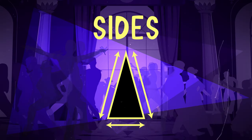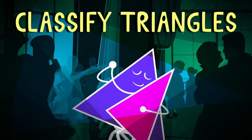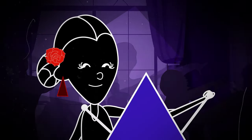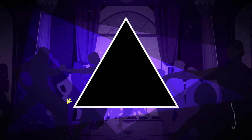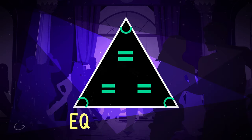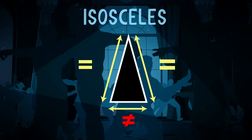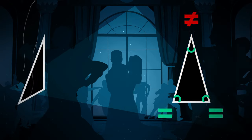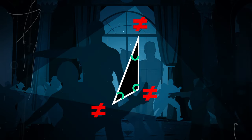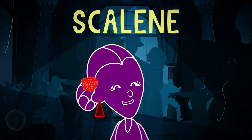Measure the sides and angles. Classify triangles. Here's something super magical where everything's equal — it's equilateral. Look at these isosceles: two sides the same, two matching degrees. But if no sides are the same and no angles are the same, then scalene is its name.